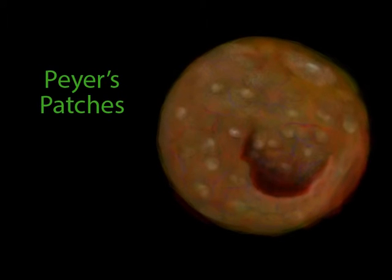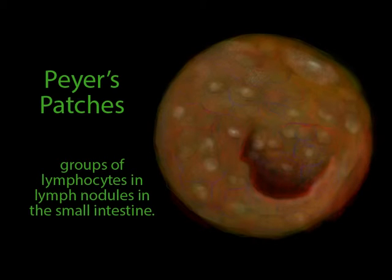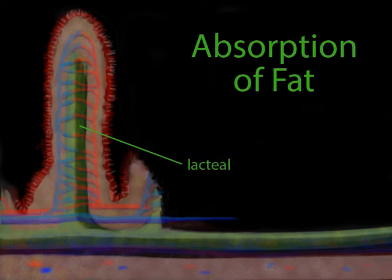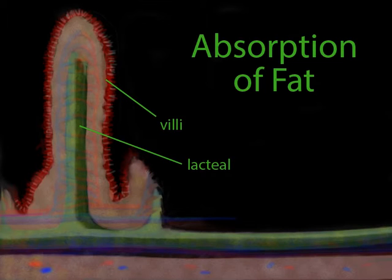Peyer's patches are very similar to tonsils. They are groups of lymphocytes and lymph nodules found in the small intestines — typically in the last third of the small intestine. Once again, they are strategically located to deal with foreign invaders. The lymphatic system's second function takes place here in the small intestine as well: the absorption of fats. There are specialized lymph vessels called lacteals in the intestinal villi. These pick up fats released from digested food and absorb them into the villus tissue. The liquid in the vessels takes on a milky color, and instead of being called lymph, this fluid is called chyle. The chyle eventually gets dumped into the subclavian vein, just like lymph.